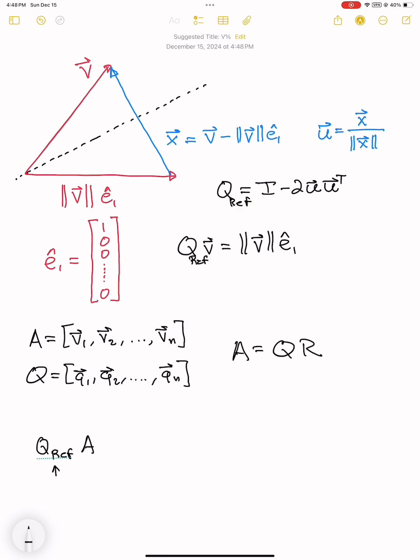If we apply a householder reflection for v1 to A, we eliminate all the entries below the first entry in the first column of A.